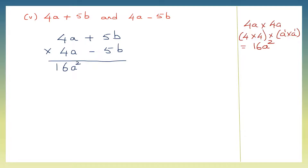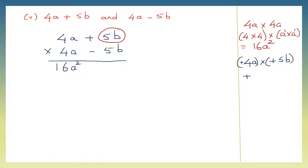Now we move on to 4a into plus 5b. Let's put them into brackets to make it easier. Plus into plus is plus. Now let's multiply the numbers: 4 fives are 20. Now we'll multiply the literals: a into b is ab. So let's write plus 20ab.